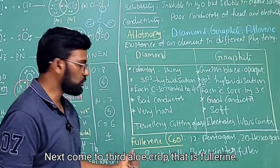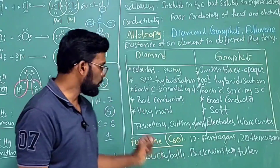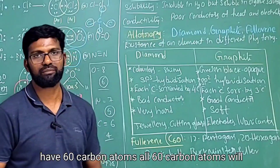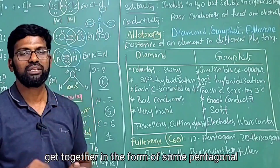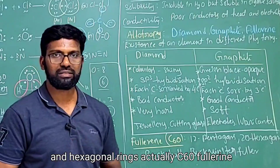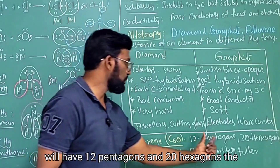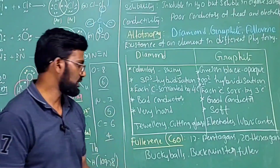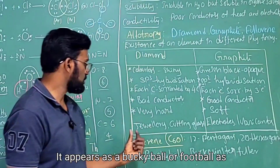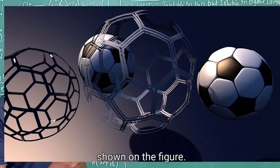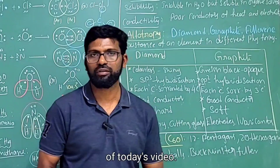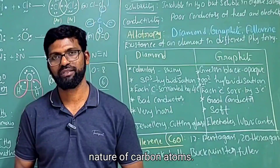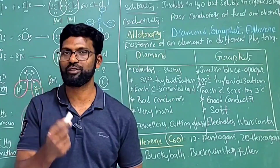The third allotrope is fullerene, also called C60. One fullerene molecule contains 60 carbon atoms linked together in the form of pentagonal and hexagonal rings — specifically 12 pentagons and 20 hexagons. The name fullerene comes from American architect Buckminster Fuller. It appears as a ball shape, known as buckyballs, resembling a football. These are the main points of today's video — we'll meet in the next video on the versatile nature of carbon atoms. Thank you for watching; share this video with your friends and don't forget to subscribe.